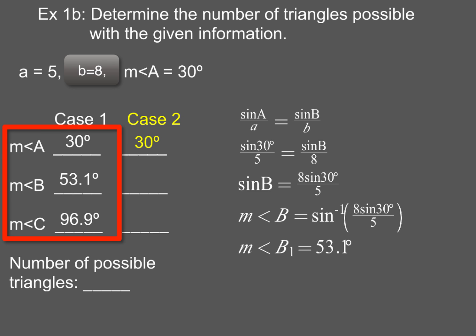So once I know angle B is 53.1, I use the triangle sum theorem to figure out the measure of angle C is 96.9 degrees. But remember, we've got to test and find a possible case 2. So if I find the supplement to angle B, I end up with 126.9 degrees. Once I know the measure of angle B is also a possibility of 126.9 degrees, I can use my triangle sum theorem for case 2 to determine that my measure of my other angle C could be 23.1 degrees.